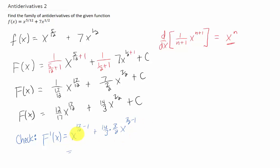What do we end up with? We have 17 twelfths minus 1 is x to the 5 twelfths. We can cancel our 3's, and our 14 over 2 becomes a 7, and the power on x is 3 halves minus 1, which is 1 half. Is that what we started with? It is.